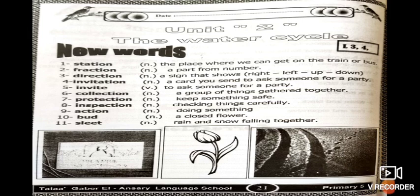The first word is 'station.' Station means the place where we can get on the train or bus. I go to the train station to get on a train. I go to the bus station to get on a bus, or I wait for the bus at the bus station.